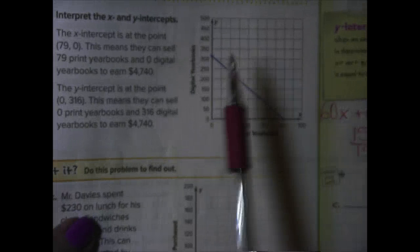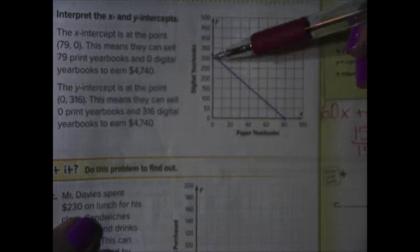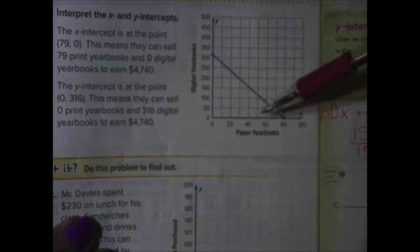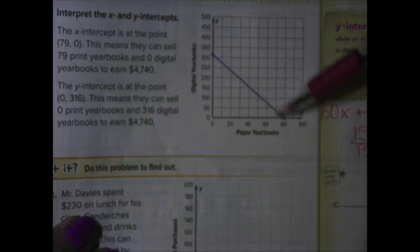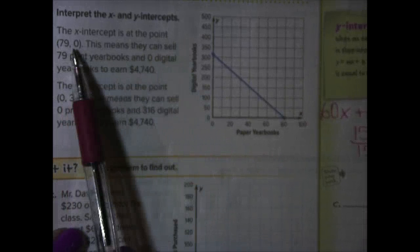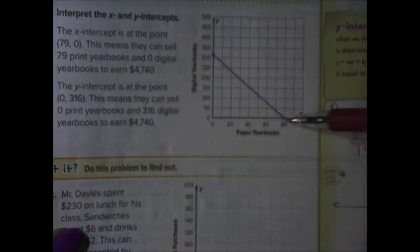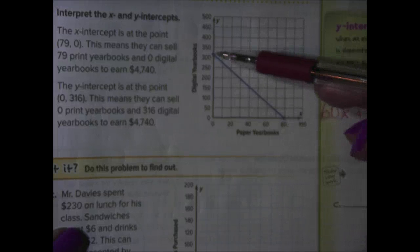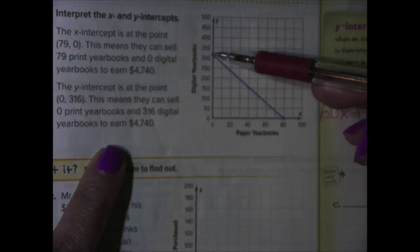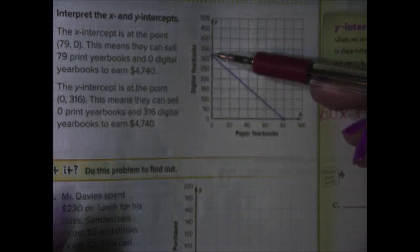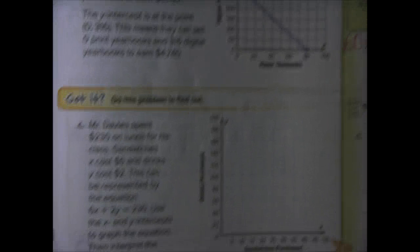So, now they've graphed their points, 316. Notice that it's between 300 and 350. You're just going to move it closest to 300. And, 79 is just about at the 80. And, then they've drawn their line. So, to explain, the X-intercept is the point, 79, 0. This means they can sell 79 print yearbooks and 0 digital yearbooks to earn 4,740. Or, they could sell, the Y-intercept means they could sell 316 digital yearbooks and 0 print yearbooks to earn 4,740.